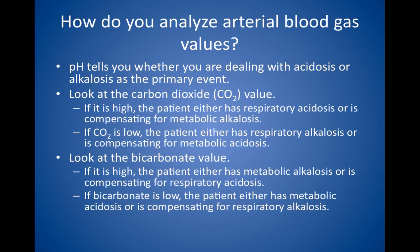And three, look at the bicarbonate value. If it is high, the patient either has metabolic alkalosis with a pH of greater than 7.4, or is compensating for respiratory acidosis with a pH of less than 7.4. If the bicarbonate is low, the patient either has metabolic acidosis with a pH of less than 7.4, or is compensating for a respiratory alkalosis with a pH of greater than 7.4.